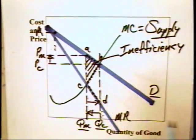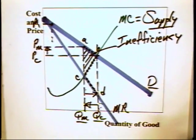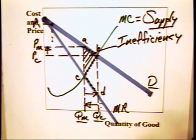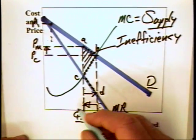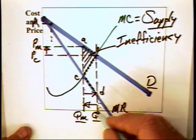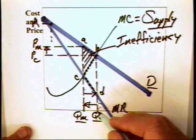The problem there, however, is that the consumers have a real free rider problem. That is, they can all get together and say, hey, we can be better off if we get the monopolist to expand production from QM to QC.